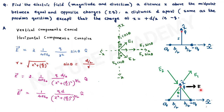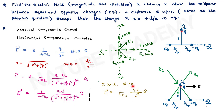The resultant electric field points in the x direction. When z is much greater than d, d tends to zero and E-bar becomes 1 over 4π epsilon-naught times Qd over z-cubed times x-cap.